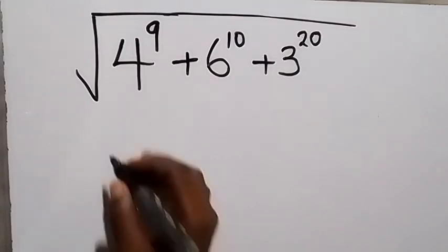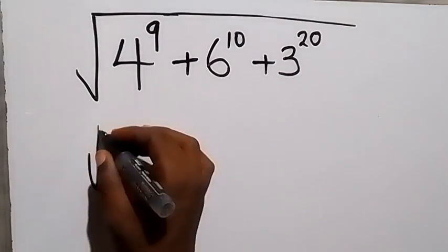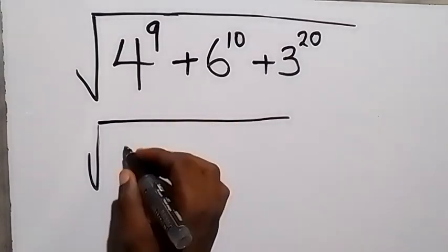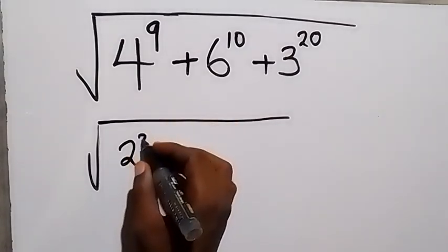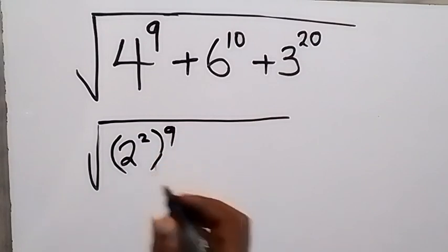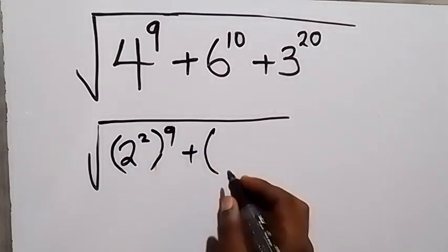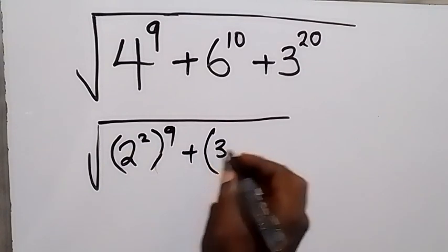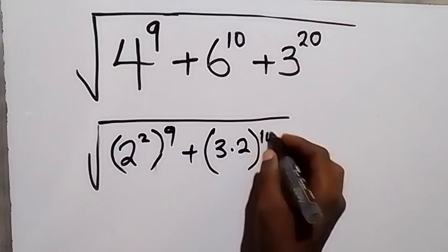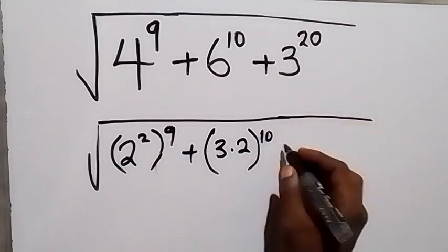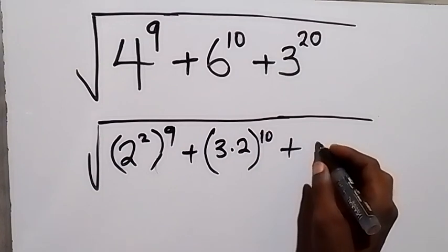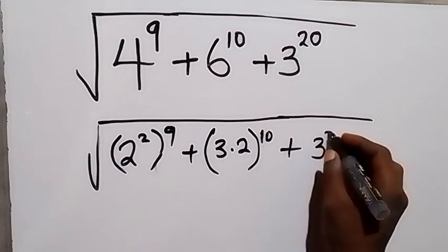Now from here, root 4 raise to power 9 can be written as 2 squared, then raise to power 9 — because 2 squared is the same thing as 4. Then we can separate 6 as 3 times 2, raised to power 10. Then we have plus 3 raise to power 20, which we can write as 3 squared.